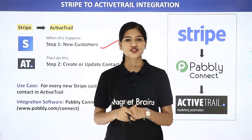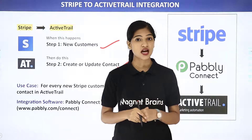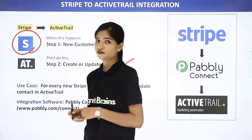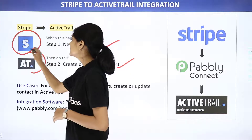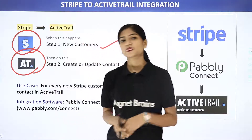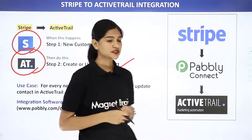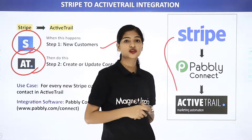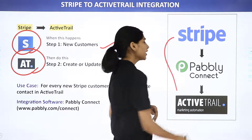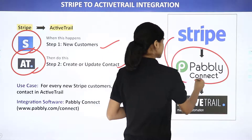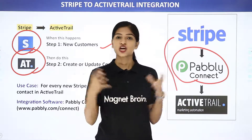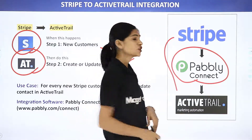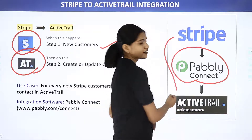Let us know what these two software applications are all about. Stripe is an online payment processing software, whereas ActiveTrail is an email marketing software. The issue is that Stripe and ActiveTrail don't have any integration between them, and that is why we are going to use Pabbly Connect, a third-party application, to integrate these and send data from Stripe to ActiveTrail.